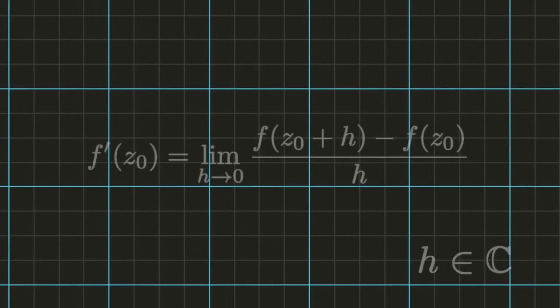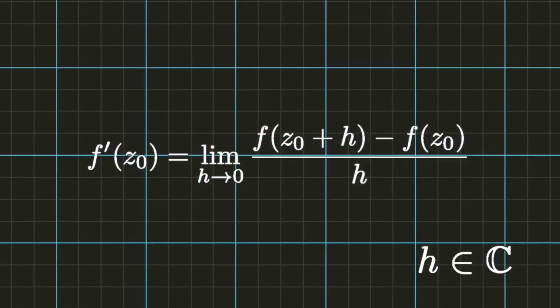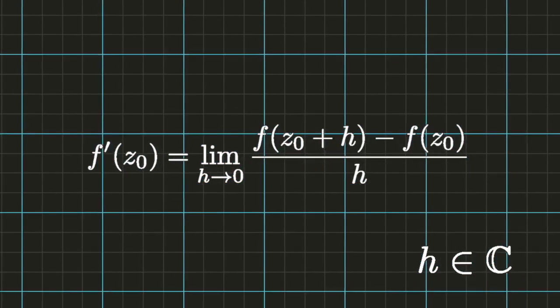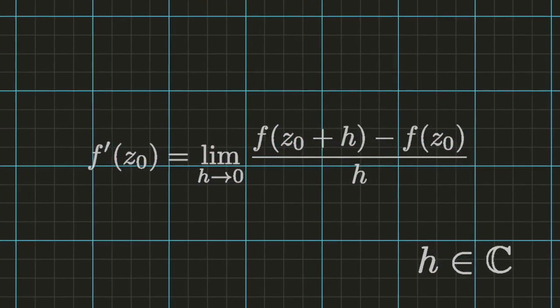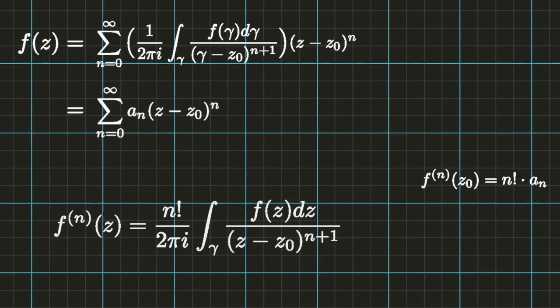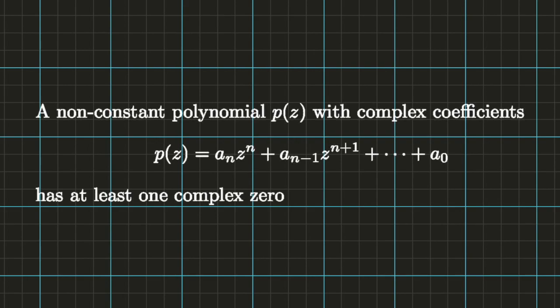Although the definition of the derivative of a function of a complex variable mimics the definition for the derivative of a function of a real variable, complex analytic functions satisfy much stronger properties than functions of a real variable which possess only a single derivative. We have seen that the condition that a function possesses a single complex derivative implies it possesses an infinite number of derivatives. Functions which are complex analytic in the entire complex plane satisfy very strong properties, and we've only just begun to scratch the surface of the beautiful subject of complex analysis. See you next time.